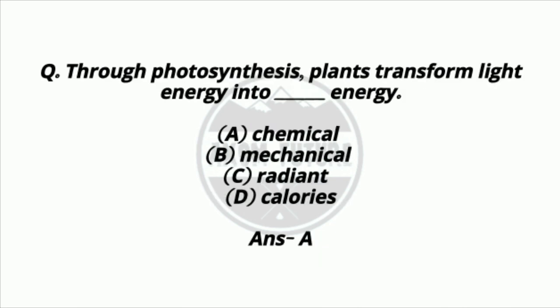Question 16. Through photosynthesis, plants transform light energy into which type of energy? Option A: Chemical. Option B: Mechanical. Option C: Radiant. Option D: Calories. Answer: Option A — Chemical energy.